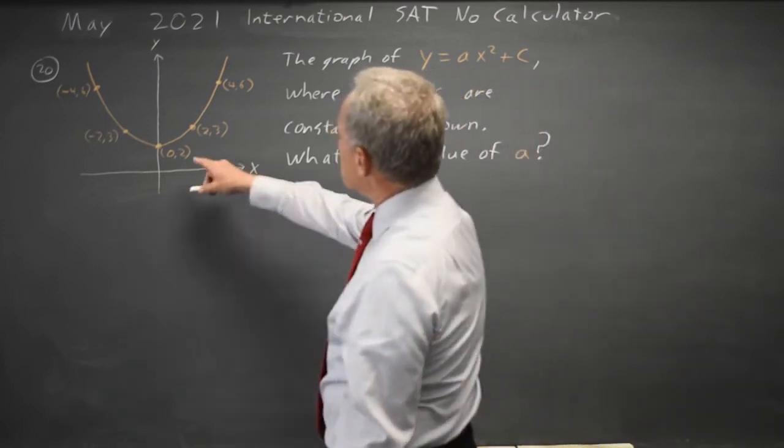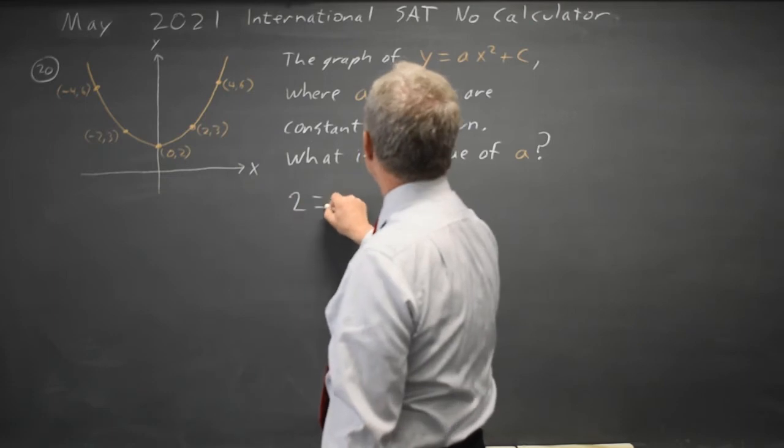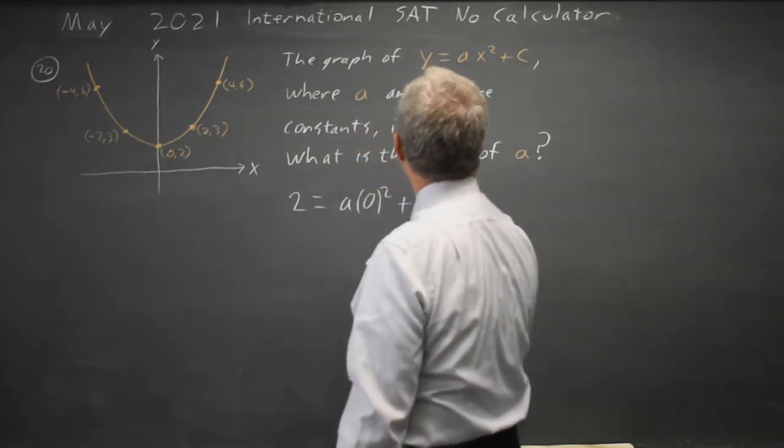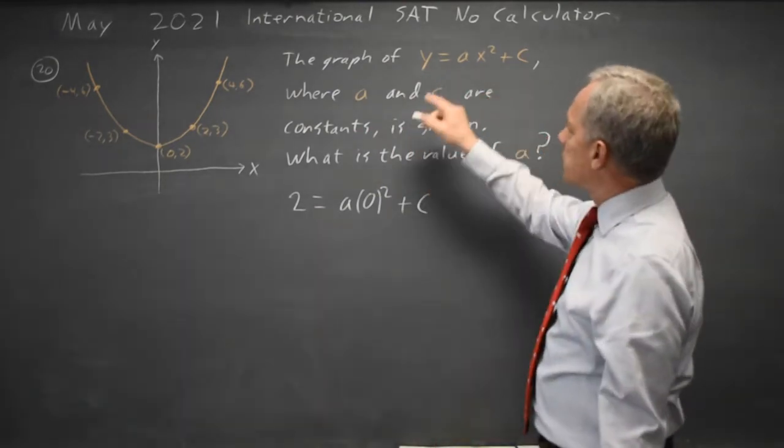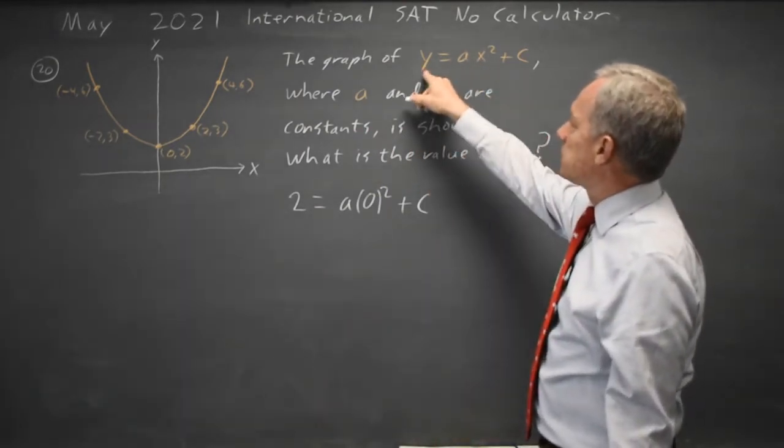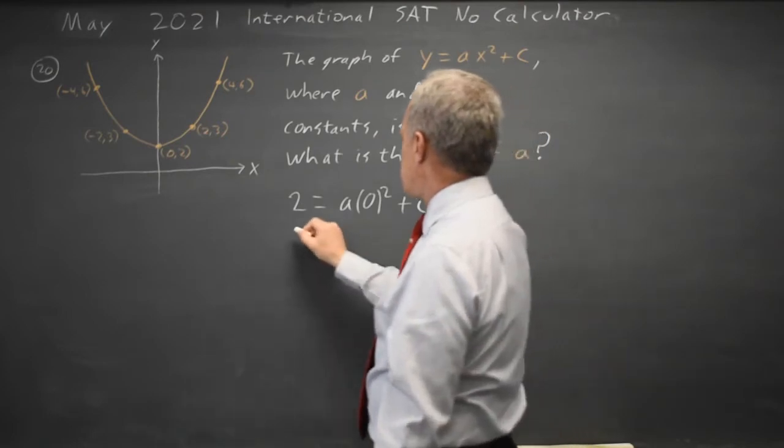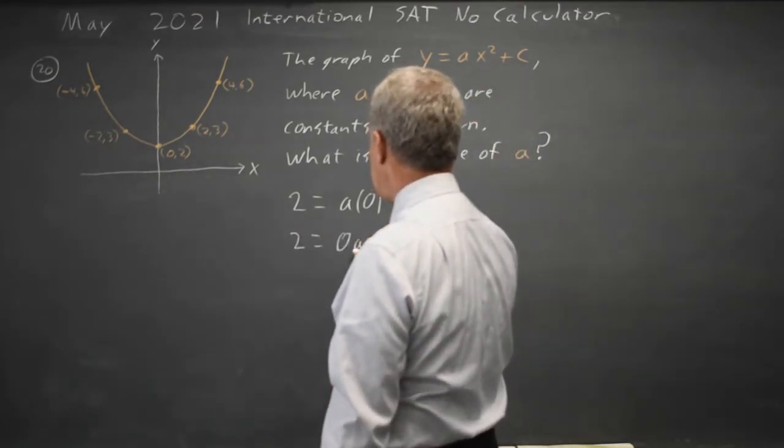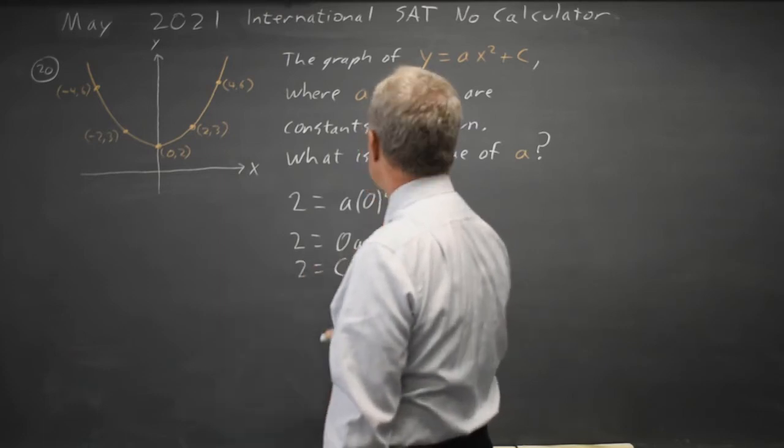And we have the point. So y equals 2 gives a times 0 squared plus c. If I substitute x equals 0, y equals 2 into the original equation, I have 2 equals a times 0 plus c, and 0 times a is 0, so 2 equals c.